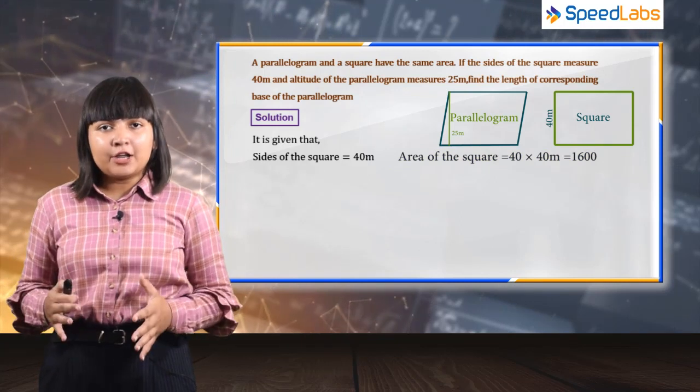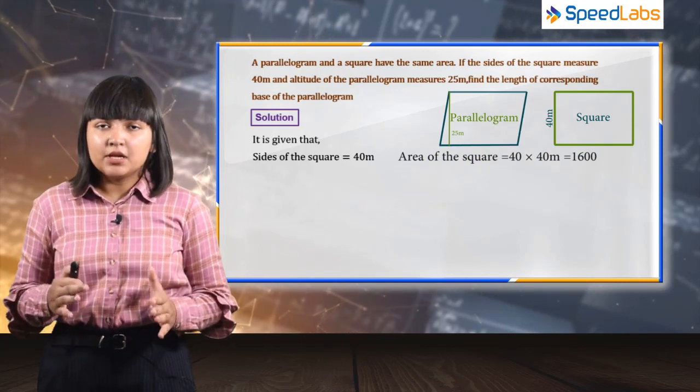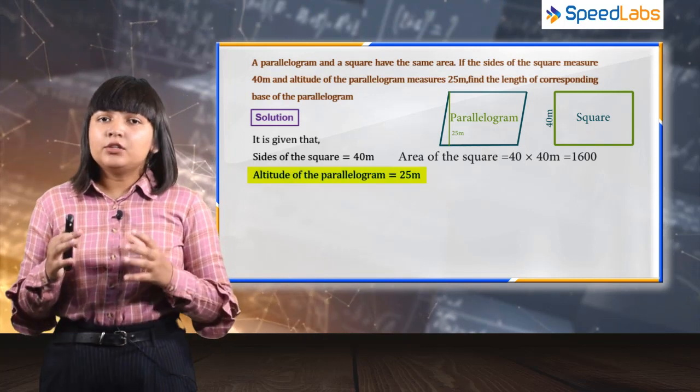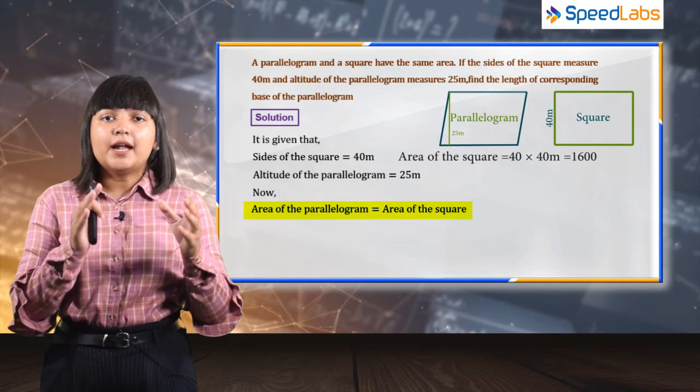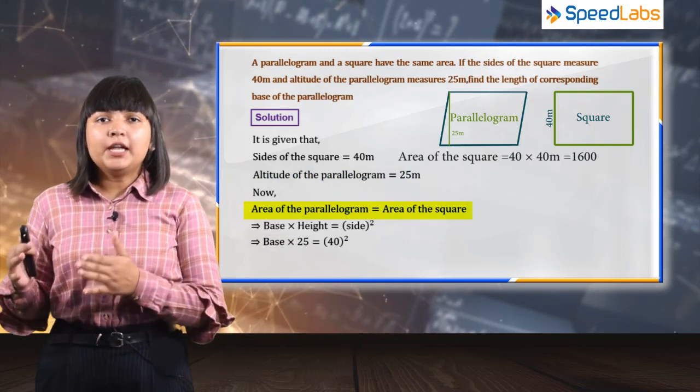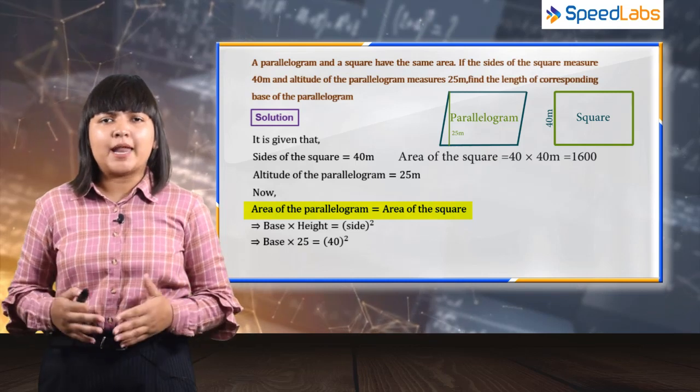We know that area of parallelogram is base into the corresponding altitude. The altitude length is given as 25, so you can say that 1600 is equal to 25 into the corresponding base of this parallelogram.